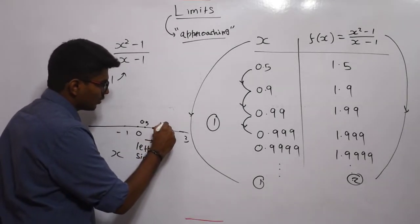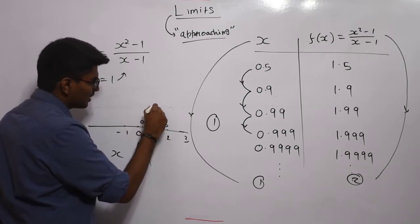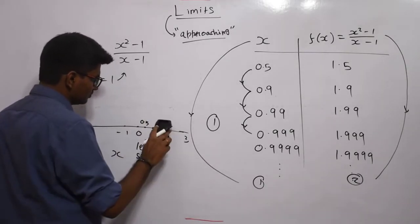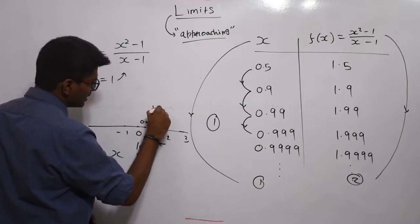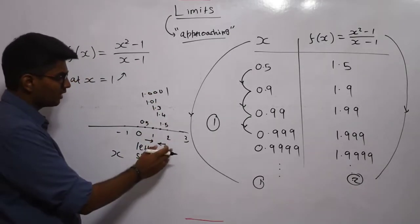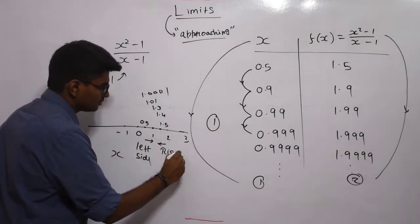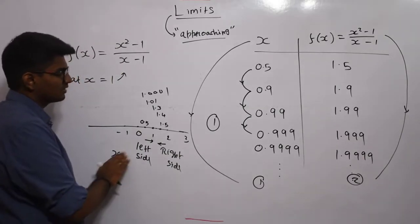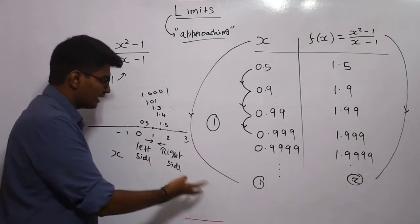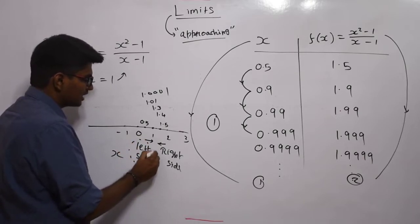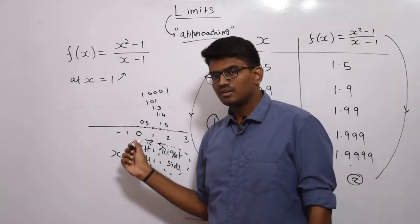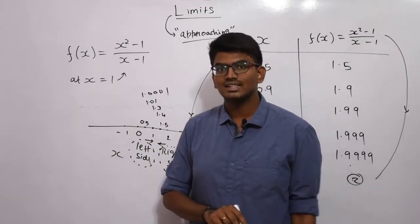For example, from the right side I could take 1.5, 1.4, 1.3, 1.01, 1.001 — decreasing towards 1 from the right. So even approaching from the left hand side and also from the right hand side, when I do both cases, my value of f(x) should be the same. If f(x) is the same when approaching from both left and right, then only we can say that the limit exists.